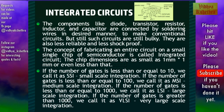The digital integrated circuits can be classified based on the number of gates on chip. If the number of gates is less than or equal to 10, we call it small scale integration. If the number of gates is less than or equal to 100, we call it medium scale integration. If the number of gates is less than or equal to 1000, we call it large scale integration. And if the number of gates is greater than 1000, we call it very large scale integration.